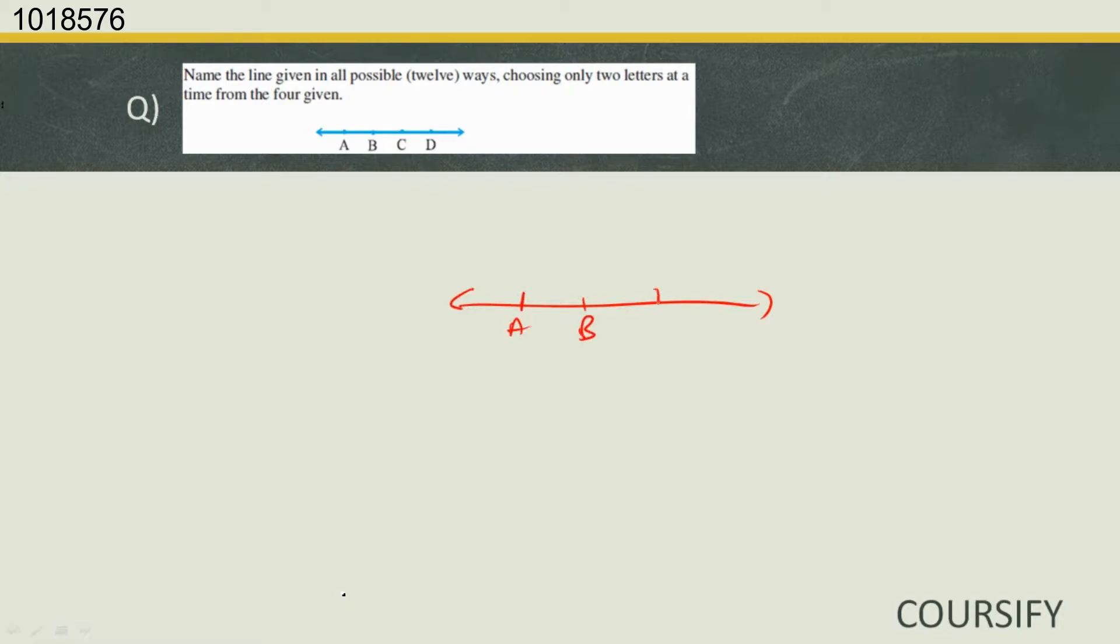A, B, C, and D. Right, so all the ways to choose... the ways to name the line would be: you start from here and end here.